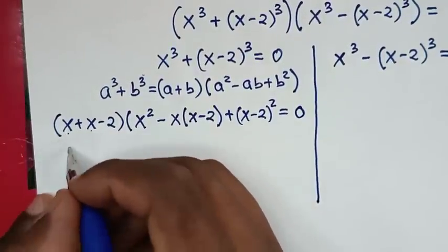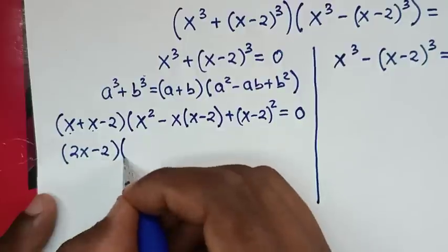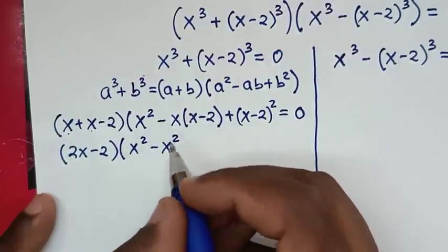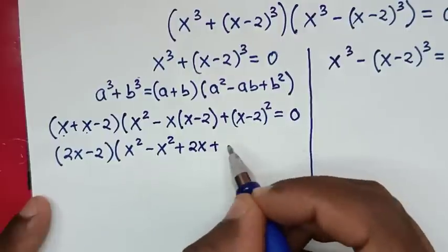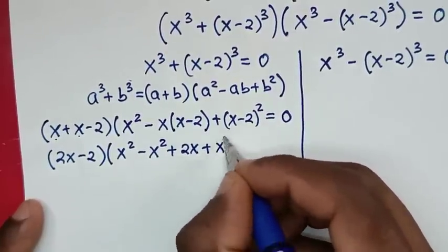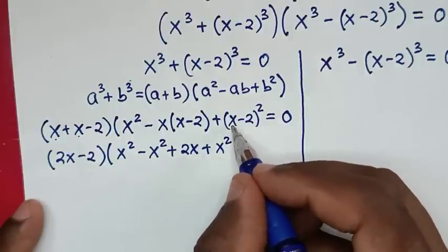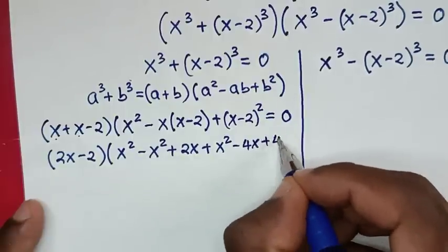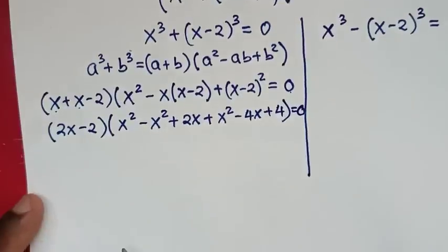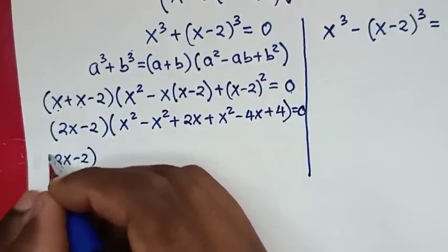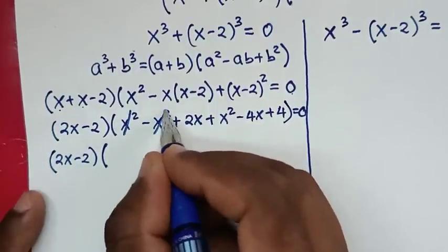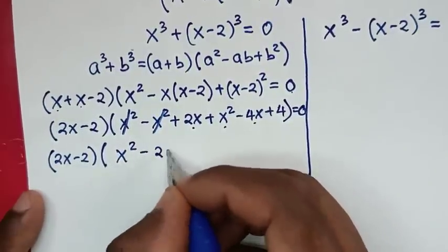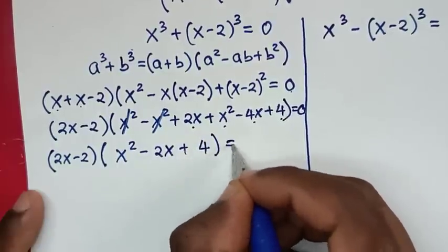Expanding: x plus x is 2x, minus 2. Then inside: x squared, minus x times x minus 2 gives negative x squared plus 2x, plus the square of x minus 2 gives x squared minus 4x plus 4. Simplifying inside the bracket: x squared terms cancel, leaving x squared minus 2x plus 4, equals 0.